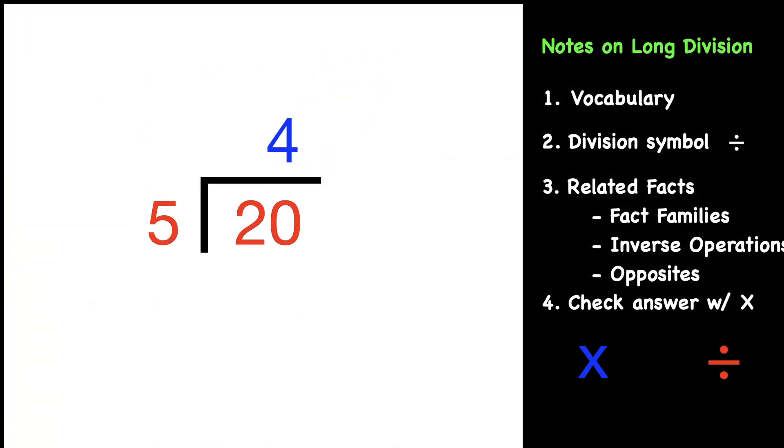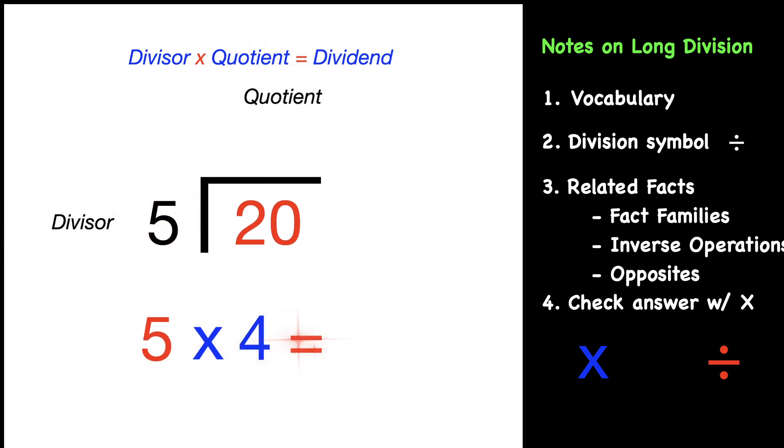You can also check your answer using multiplication, which is how I do it when I grade papers. The formula is divisor times quotient equals dividend, just the same as before. So 5 × 4 = 20, your dividend.